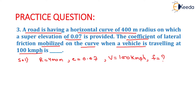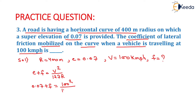We know the equation of super elevation: E plus F equals V squared upon 127R. Putting the values — 0.07 plus F equals 100 squared upon 127 into 400. On solving this, we get the coefficient of lateral friction F equals to 0.13.